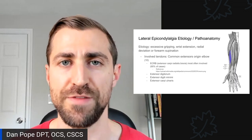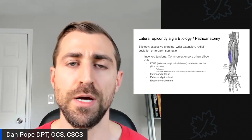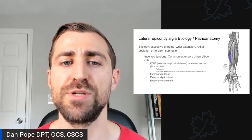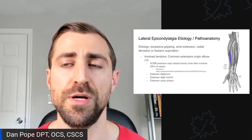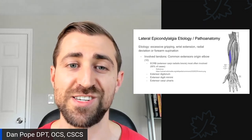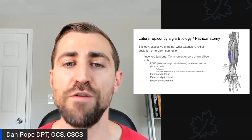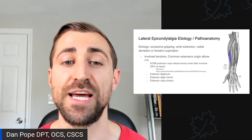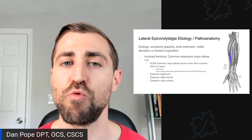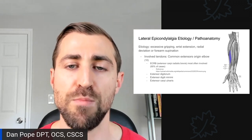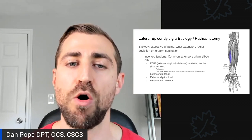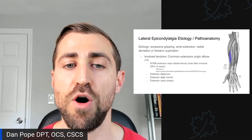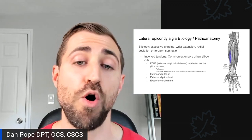So what is the etiology — the mechanism of injury? We think it's from excessive gripping, wrist extension, radial deviation, or wrist supination — basically too much work for the wrist extensors. The involved tendons come from the common wrist extensors, where the tendon originates on the humerus. The most common muscle involved is the ECRB, or extensor carpi radialis brevis, involved in about 95% of all cases.